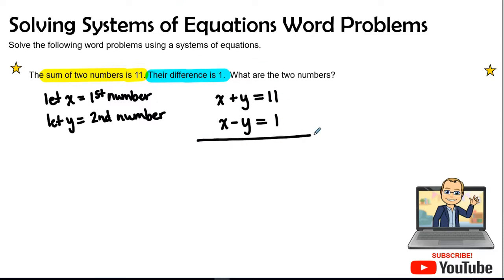Now right here, we have a system. And so this is a system using the elimination method. So we notice right here, right away, that the positive Y and the negative Y equals zero. And so that is going to zero out, leaving us that we are going to combine like terms. X plus X is 2X equals 11 plus one is 12. Now let's go ahead and solve for X. So if we divide by two on both sides, X is equal to six, 12 divided by two is equal to six.